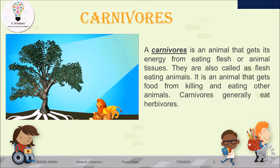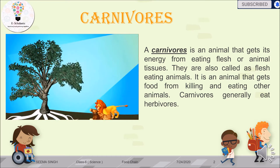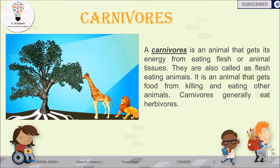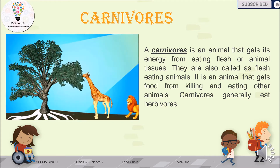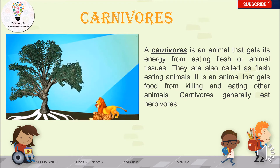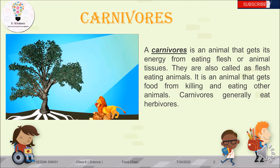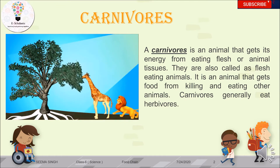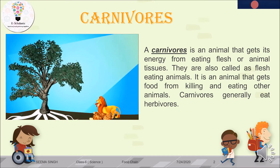Now, the lion was killing the giraffe and feeding on it — these kinds of animals are known as carnivores. A carnivore is an animal that gets its energy from eating flesh or animal tissues, so they are also called flesh-eating animals. Carnivores kill and eat other animals; they feed on other living organisms' flesh or tissues. Carnivores generally feed on herbivores.